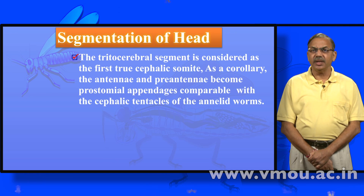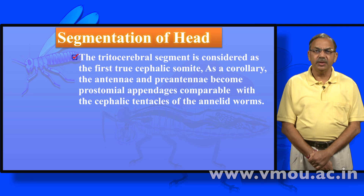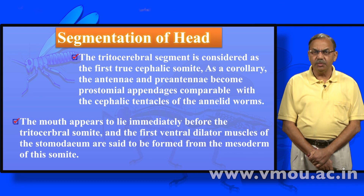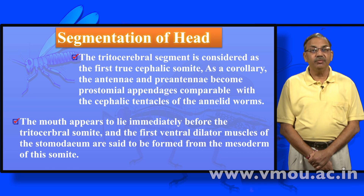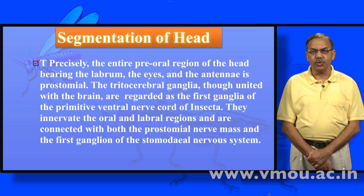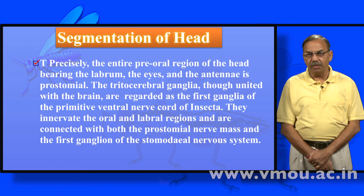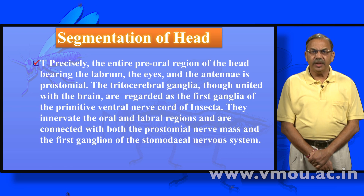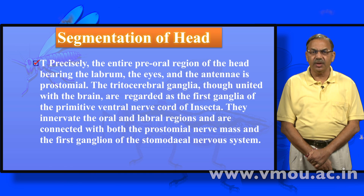The trito-cerebral segment is considered as the first true cephalic somite. The pre-antennal appendages become post-ominal appendages comparable with the cephalic tentacles of the annelid worms. The mouth appears immediately before the trito-cerebral somite, and the first ventral dilator muscles of the stomodeum are formed from the mesoderm of that somite — as seen in the worm-like ancestor. Precisely, the entire pre-oral region of the head bearing the labrum, the eyes, and the antennae is prostomial. The trito-cerebral ganglion, though united with the brain, is regarded as the first ganglion of the primitive ventral nerve cord of insects.